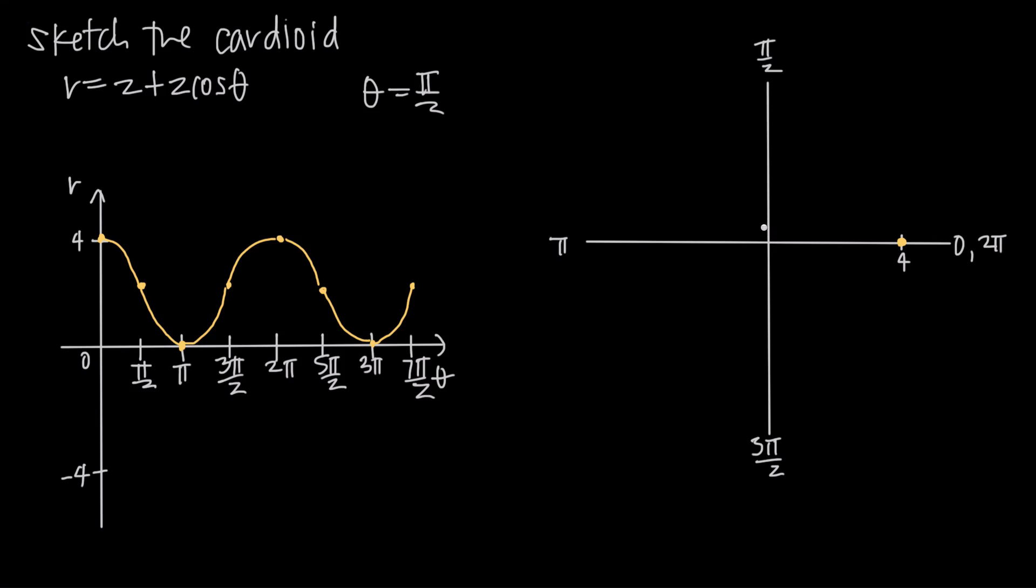we want to be out a distance of 2 from the origin. So if this is 4, then probably right about here, something like this, is 2.